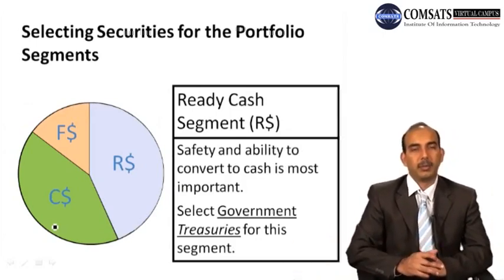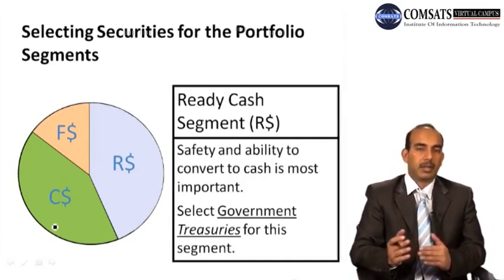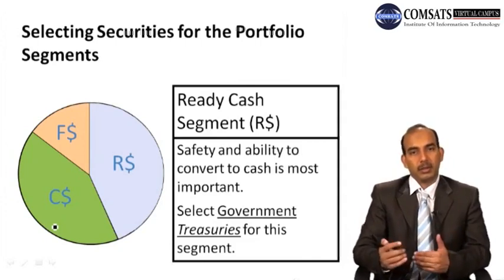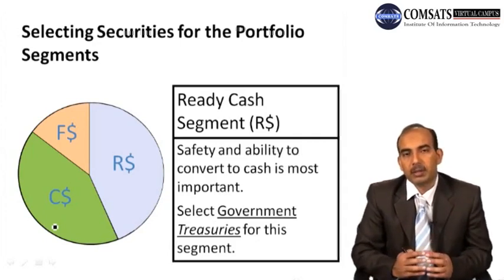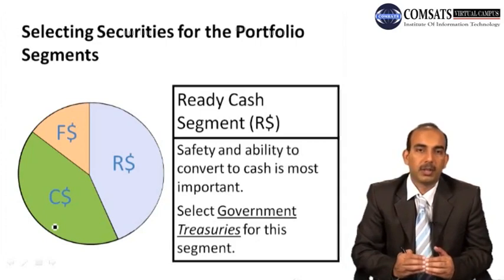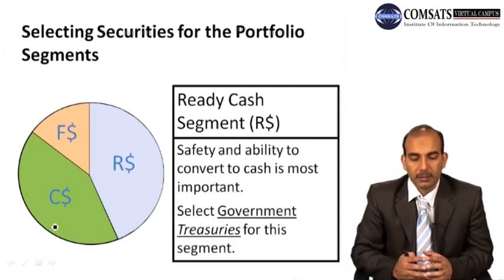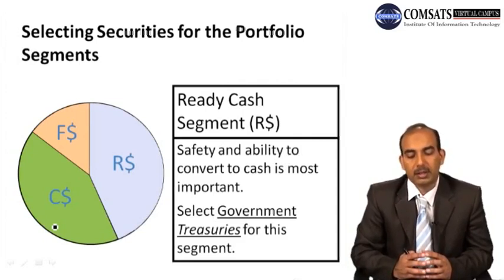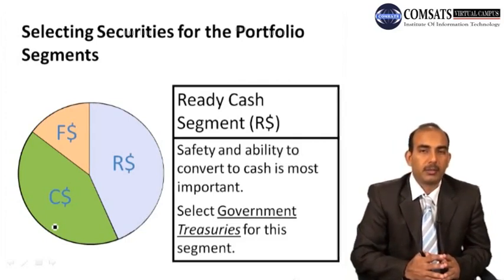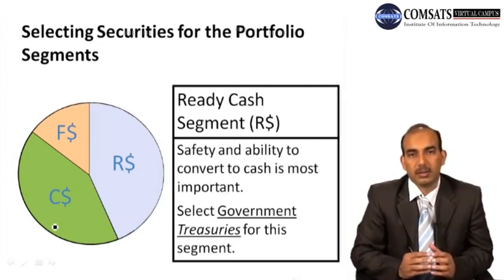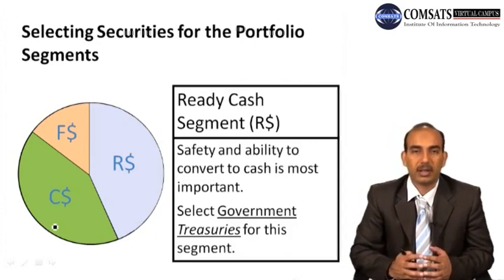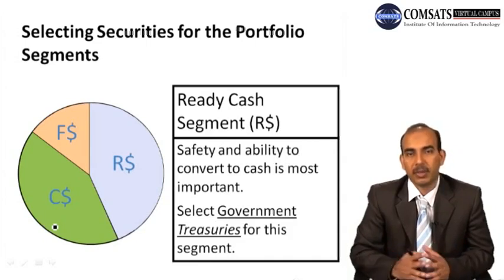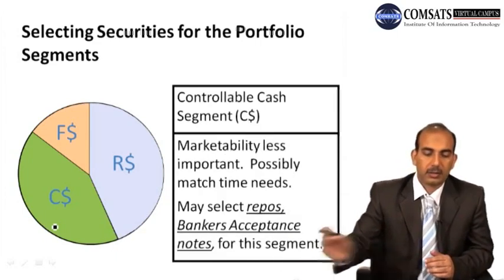Now, selecting securities for the portfolio segments. For the ready cash segment, securities must be liquidated quickly — sold in the market very quickly. Government Treasury securities are used for this kind of segment because they are risk-free, returns are sure, and investors prefer to purchase them. It is very easy for the firm to sell such securities in the market and realize cash, which can then be used in daily requirements. The other segment is controllable cash, where marketability is less important and the key is to possibly match the time needs.